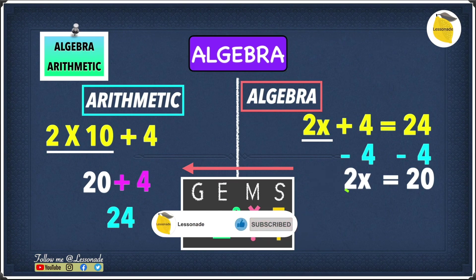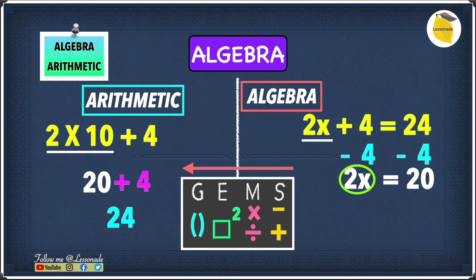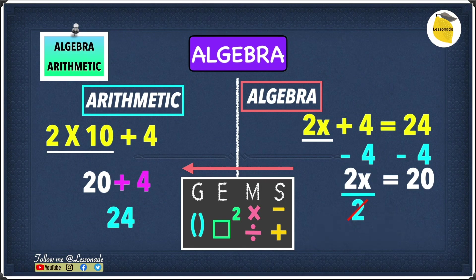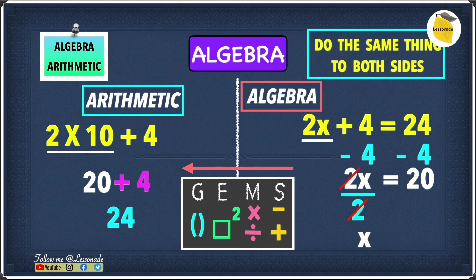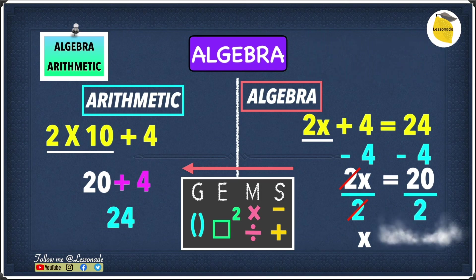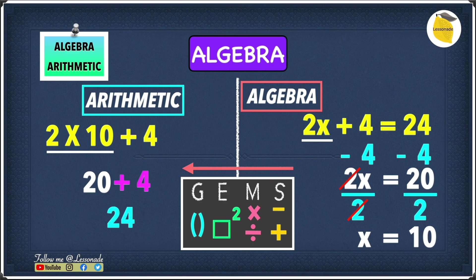Next we undo the multiplication by 2: we divide by 2 on both sides. The 2 on top and the 2 on the bottom cancel out, leaving x. 20 divided by 2 gives 10, so our answer is x equals 10. In arithmetic you work from G to S — following the order of operations. In algebra you work in the opposite direction, from S to G.